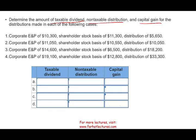From the IRS perspective, they want to treat every distribution as a taxable dividend because they want to get their taxes. If it's not a taxable distribution, it might be non-taxable, and as the shareholder, you want everything considered non-taxable — meaning tax-free. The IRS does not like this, so they would always prefer to classify it as a taxable dividend.